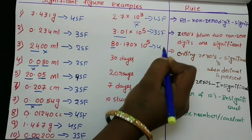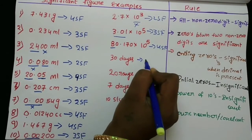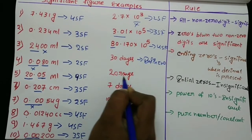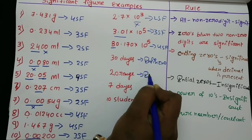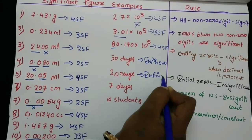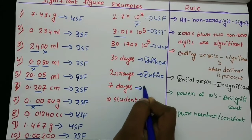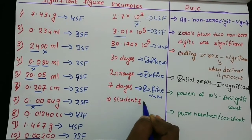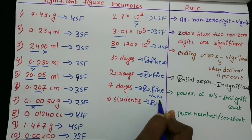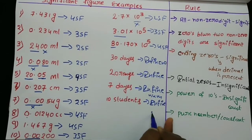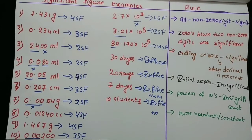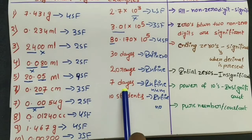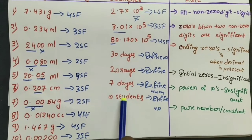Power of tens is insignificant. 30 days is a pure number and is insignificant in terms of limiting significant figures. 10,000 people is an infinite number. So here are three significant figures. If you have 10 students, you can use the infinite number.